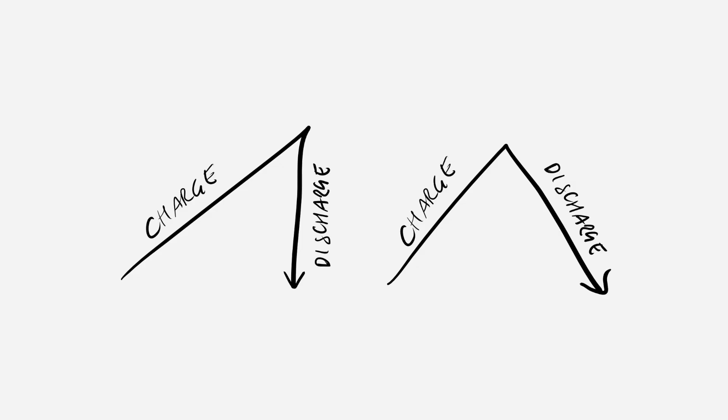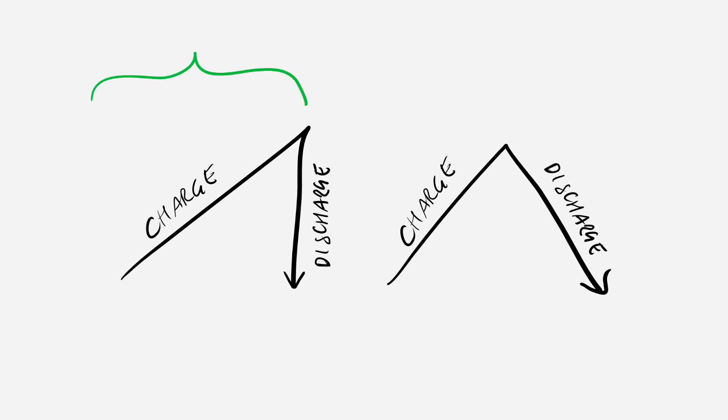The most common waveforms to start with are the triangle and the sawtooth. Generally speaking, both use the charging and discharging times of a capacitor to create voltage fluctuations. With a sawtooth we work only on the charging time, and with the triangle we work on both. The first waveform that an oscillator generates defines its core and gives name to the unit, so there are many triangle core and sawtooth core oscillators.